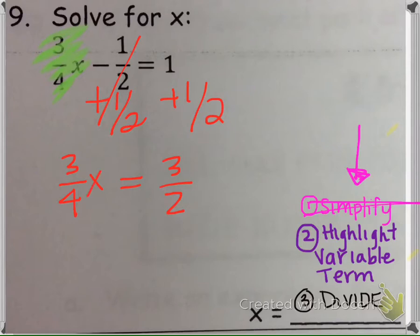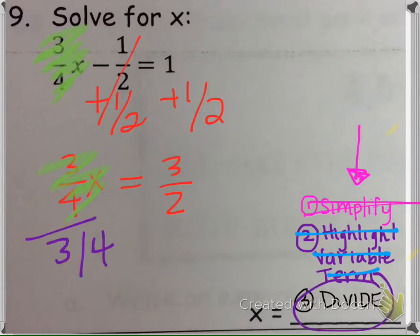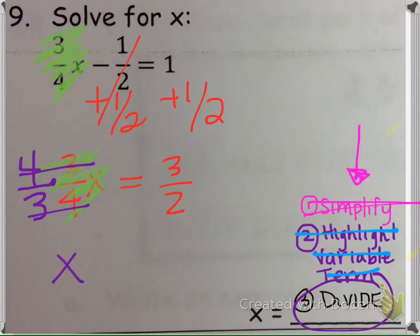And then now that this is all by itself, we would divide, but instead of dividing both sides by 3/4, since we know our fraction rules when we divide is the same thing as multiplying by the reciprocal, we would multiply both sides by 4/3 because then that's 12 over 12, which is 1x.